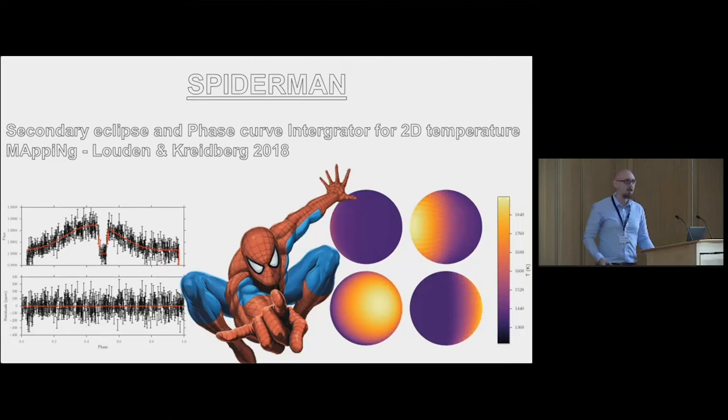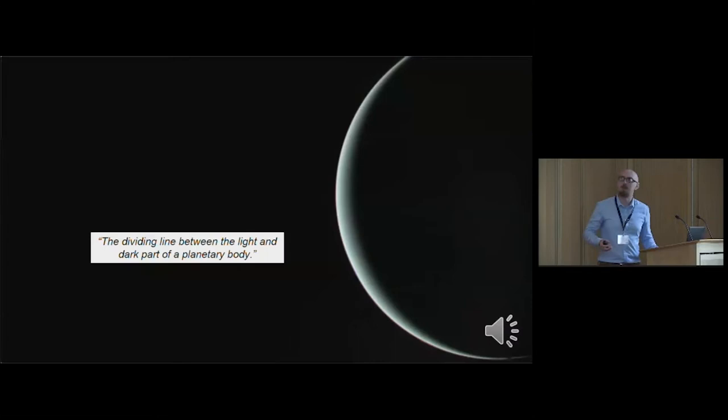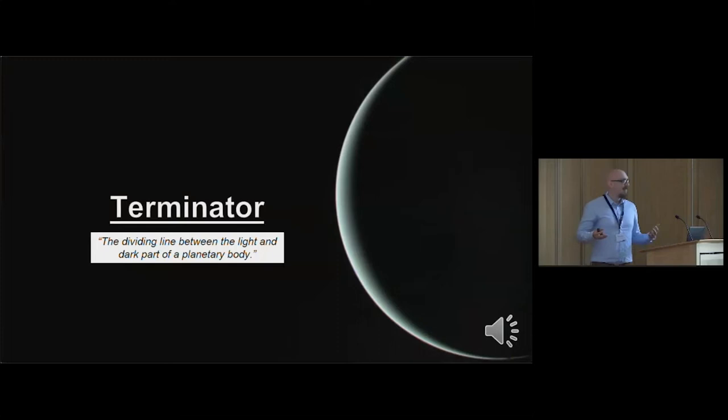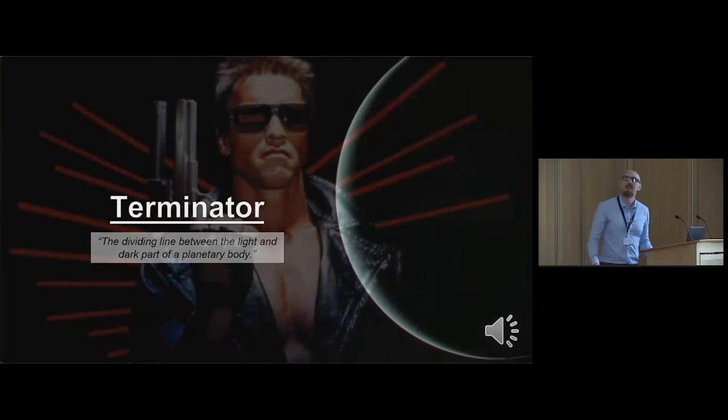My next project looks at transmission spectroscopy, so I should be a bit more careful with my name selection. The dividing line between the light and dark part of the planetary body - that's a good start. That is, of course, the terminator. And there's no way that anyone is going to confuse that with any sort of pop culture reference, so I don't have to worry about getting in trouble.